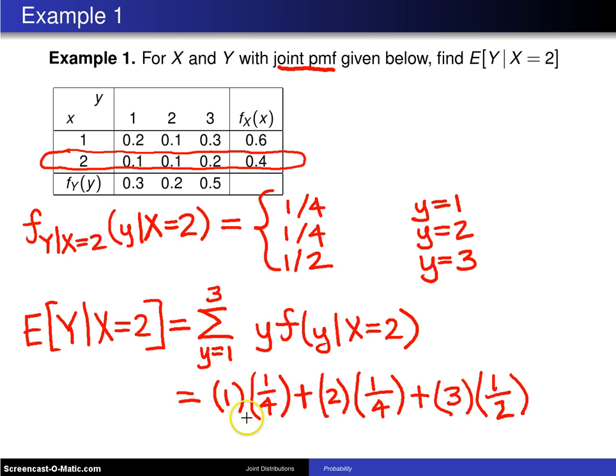And when you work that out, that's going to be 1 fourth plus 2 fourths plus 6 fourths, and that turns out to be 9 fourths or 2 and a quarter.